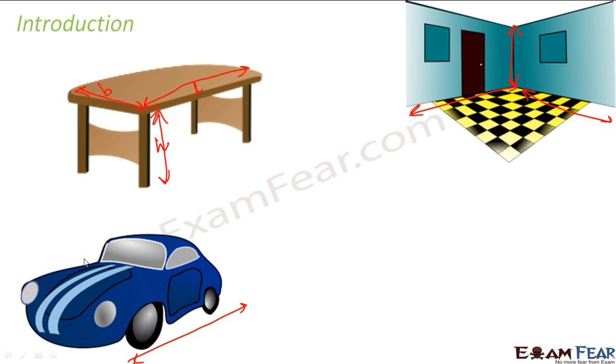Let's talk about a car. In a car, this would be the length of the car, this could be the height of the car, and this could be the width of the car. All these three together give you an idea of the size of the car.